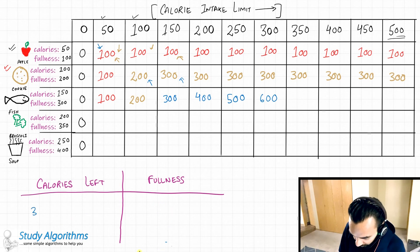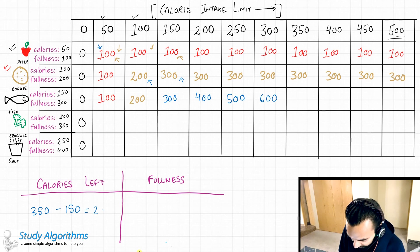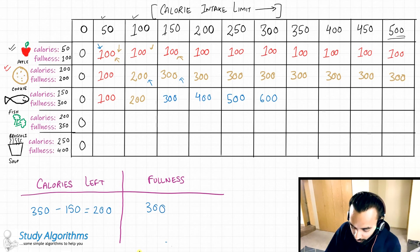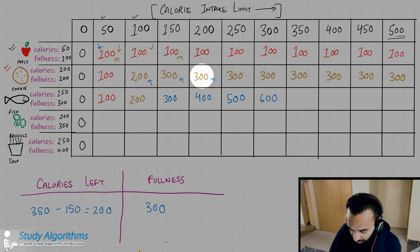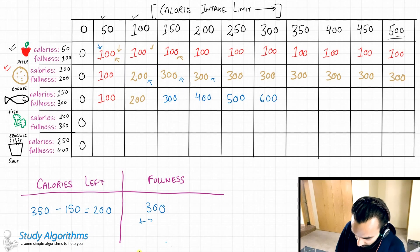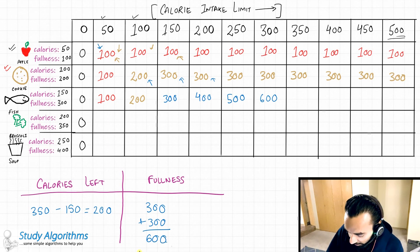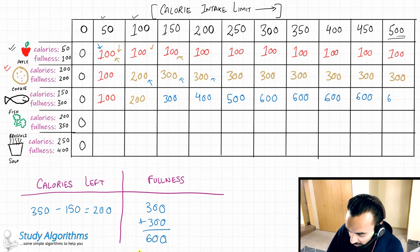Now I have 350 calories. I eat the fish, remaining with 200 calories, and already have a fullness of 300. With 200 calories, the maximum fullness is again 300, so my new fullness value is 600, which I update all the way to the end. No matter how many more calories I have available beyond this point, the maximum fullness we could achieve was 600.